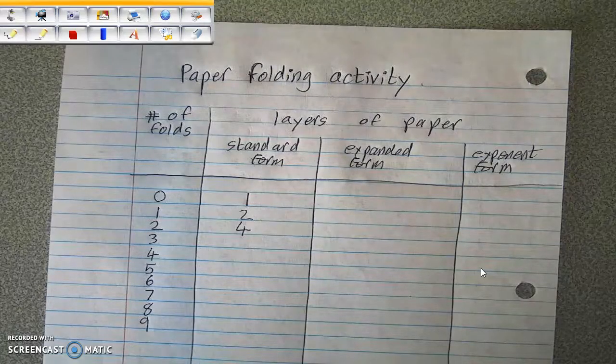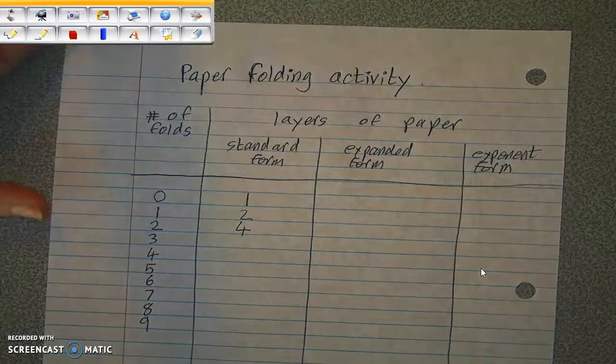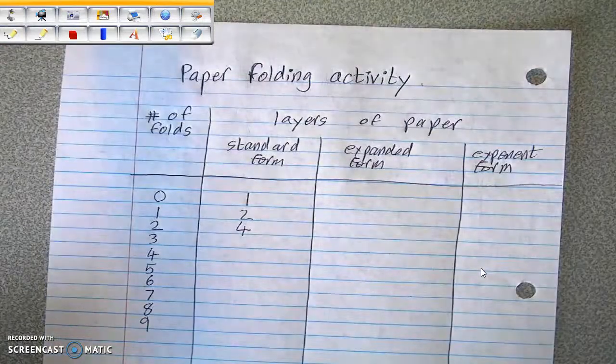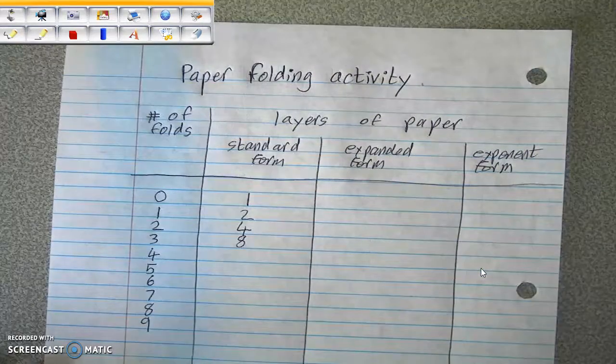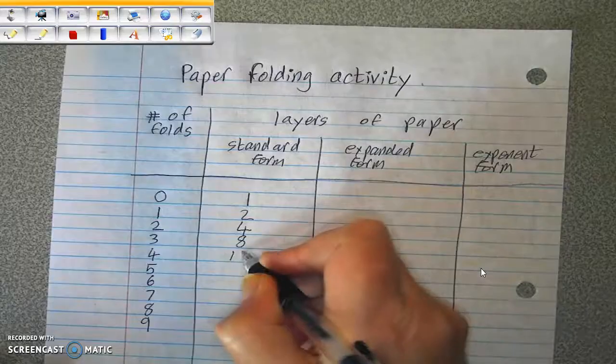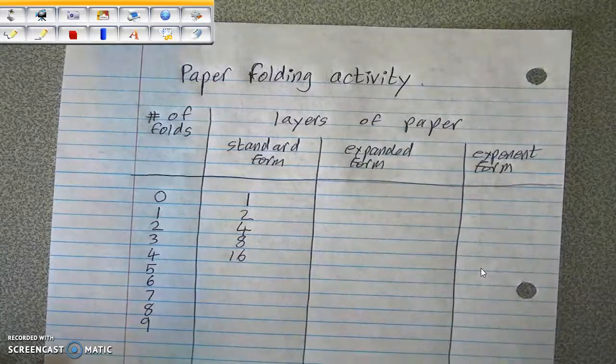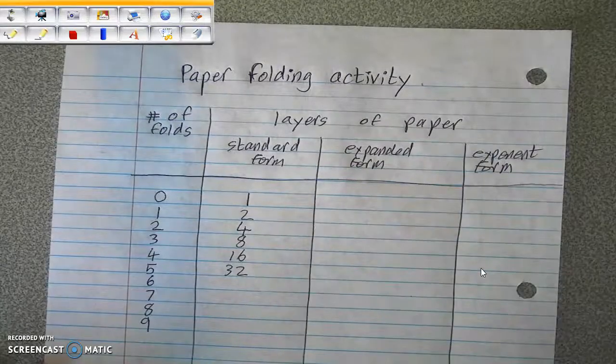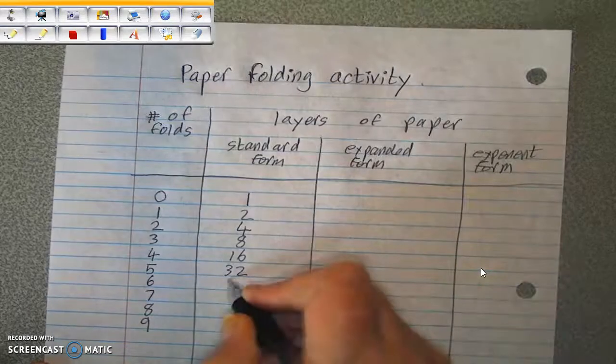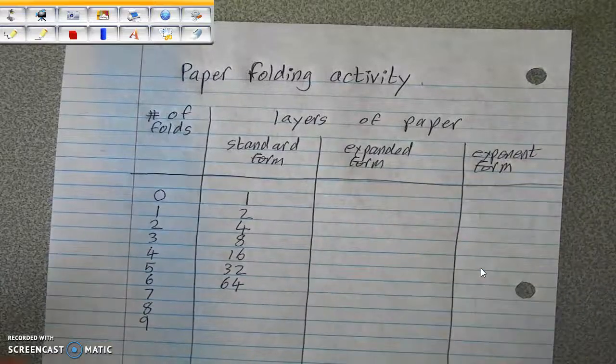All right. When you did three folds, you should have a total of eight layers of paper. Four folds, you have 16 layers of paper. Five folds, you have 32 layers of paper. Six folds, you have 64 layers of paper.